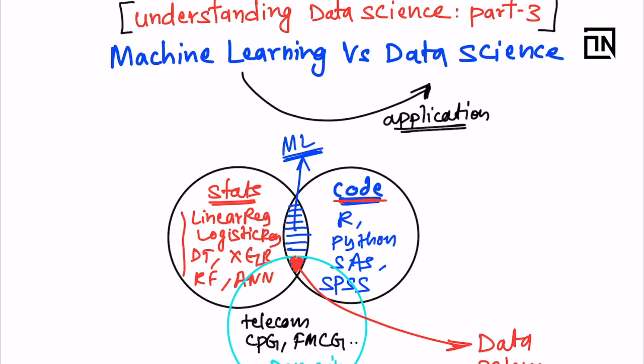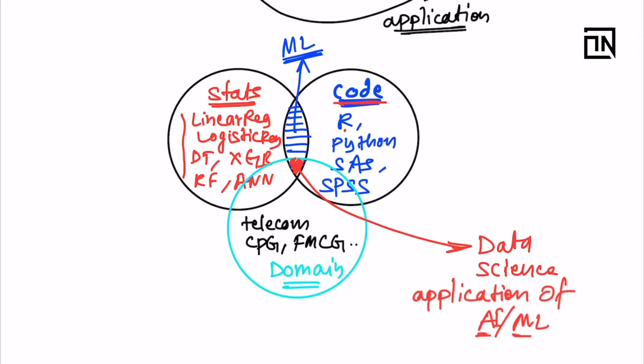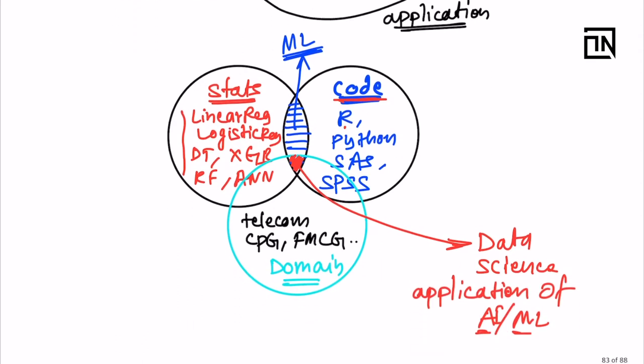So where do you code? You code it in R or Python or SAS, and then when you code it then you basically apply that code to some domain by using the domain knowledge of that industry. And this is when you are doing data science. When you do this, when you have knowledge of all these three sections, then you are known as a data scientist. So it is the intersection of all these three disciplines.